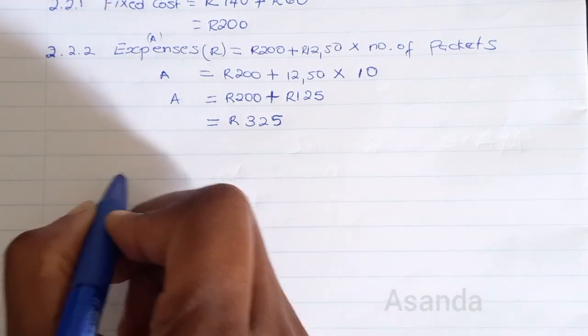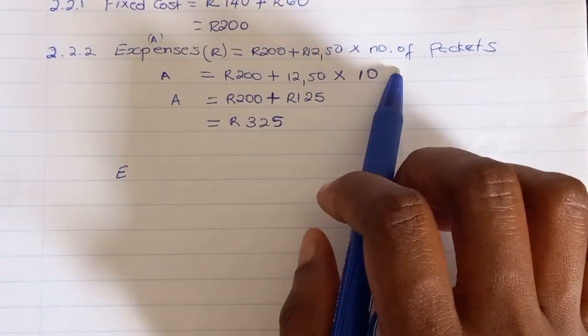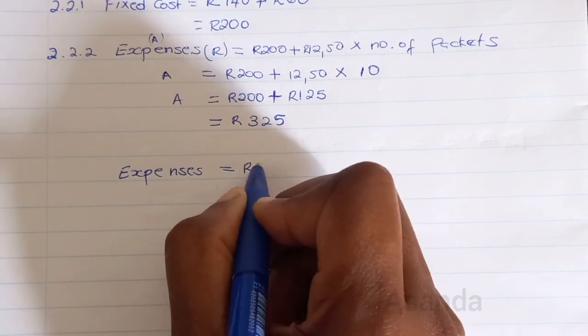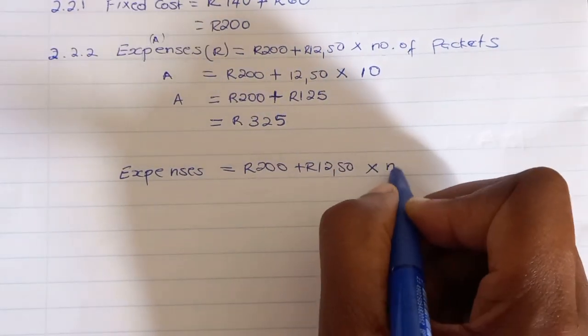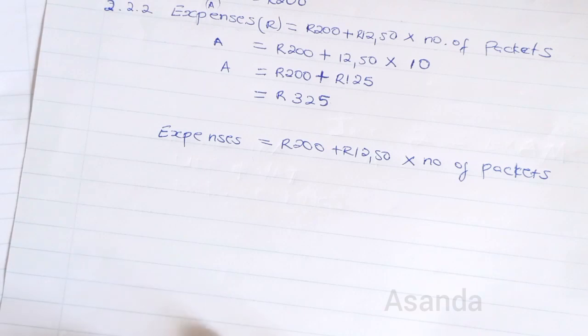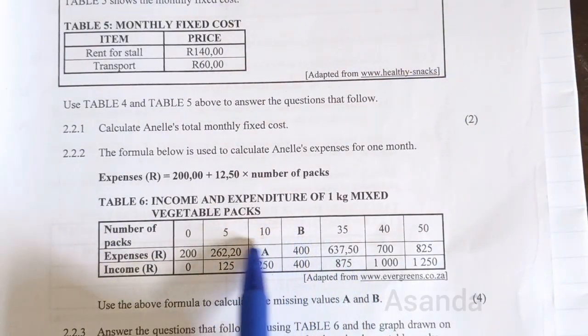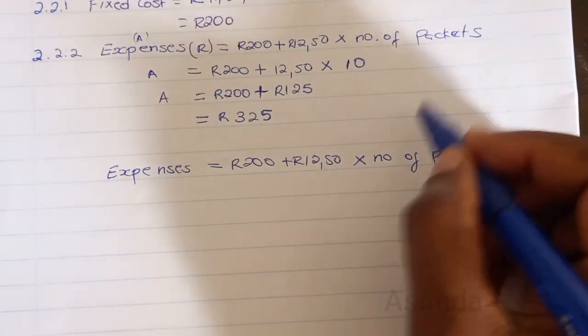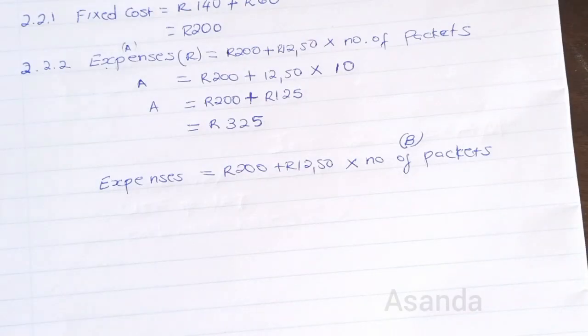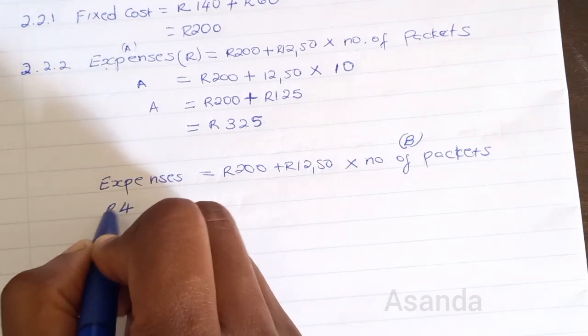Now for B, we use the same formula: Expenses = R200 + R12.50 × number of packets. This time B is the number of packets, not the expenses. Looking at the table where B is, the expenses given are R400. So we substitute R400 for expenses.